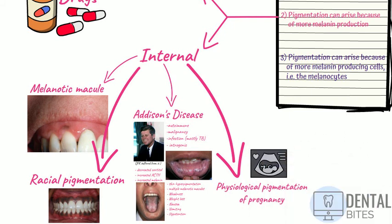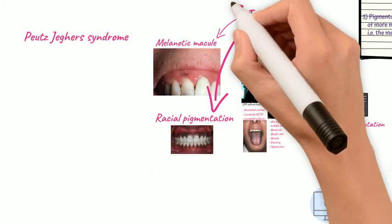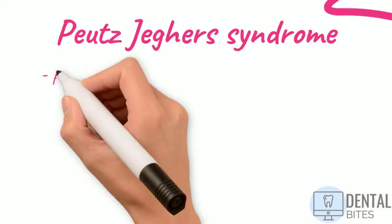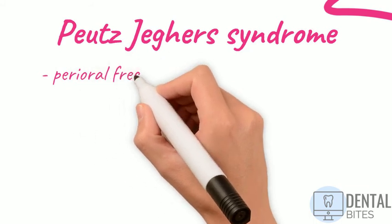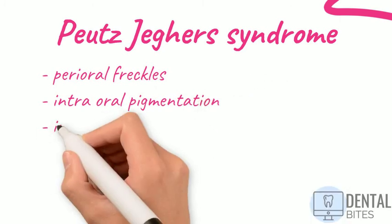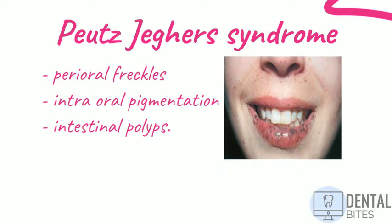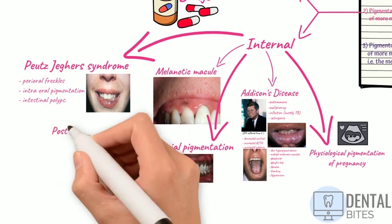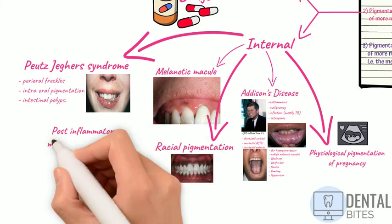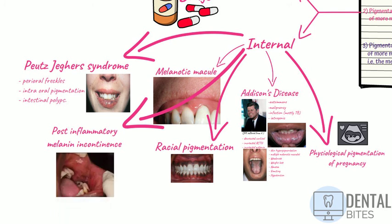Also known as melasma, this too can give oral pigmentation. Peutz-Jeghers syndrome is a genetically inherited syndrome characterized by a large number of perioral freckles, intraoral pigmentation, and intestinal polyps. Diagnosis is important because of the genetic risk of bowel cancer. Lastly, post-inflammatory melanin incontinence is where long-standing inflammatory mucosal disorders such as oral lichen planus, pemphigus, or pemphigoid cause mucosal pigmentation.